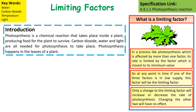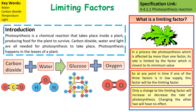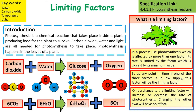Photosynthesis is the chemical reaction that takes place inside a plant. Carbon dioxide and water are chemically reacted together to produce glucose and oxygen. A limiting factor is one where, in a process like photosynthesis affected by one or more factors, its rate is limited by the factor closest to its minimum value. If one of the three factors is in low supply, the rate of photosynthesis will be limited. You only have to change one limiting factor to either increase or decrease the amount of photosynthesis taking place.